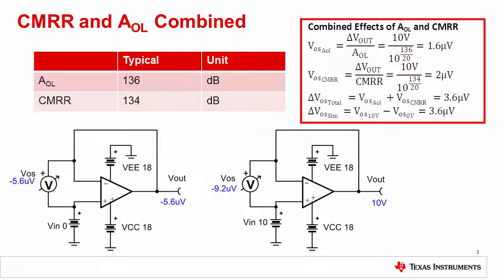This slide emphasizes how common mode rejection ratio, CMRR, and AOL errors are often combined in many common configurations. In this example, the input voltage on a simple buffer is shifted from 0 to 10 volts. Therefore, the common mode voltage as well as the output voltage shifts from 0 to 10 volts.